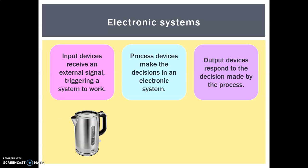Let's look at a kettle as an example. After filling it with water, we press the button — that's the input. The process is the chip inside along with the various components making decisions about what's going on. The output is first the indicator light in your kettle, and then everything turns off once it's reached the required temperature.